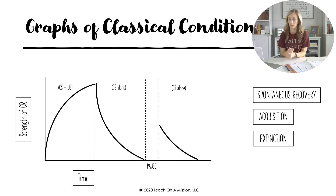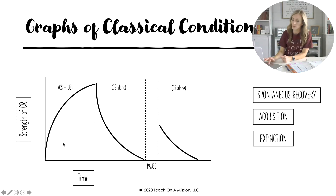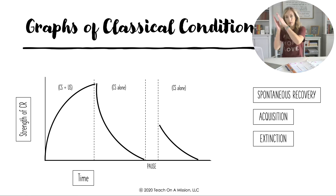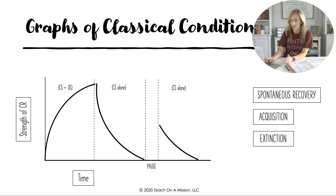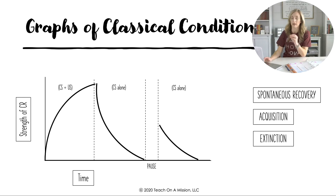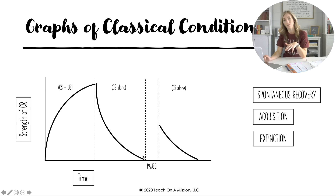Now, graphs of classical conditioning show what responses look like over time when being classically conditioned. In the first part of the graph the response is getting stronger, growing quickly when the CS and UCS are presented together. Notice the conditioned stimulus — the bell or the mouse — comes before the unconditioned stimulus, the food or the gong. Then when only the conditioned stimulus is presented alone, the response slowly goes down.